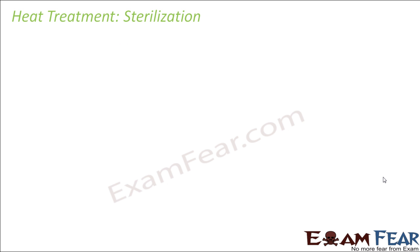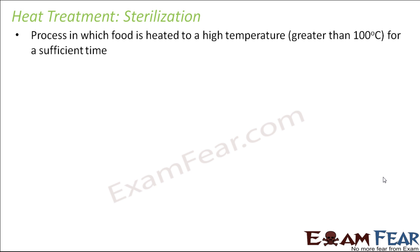One example of heat treatment is sterilization. You would have seen that feeding bottles for children are sterilized very often, almost on a daily basis. Sterilization is a process in which food is heated to a very high temperature — greater than 100 degrees Celsius — for a sufficient time. The duration of heating also plays a very important role: the greater the duration of heating, the better the result.